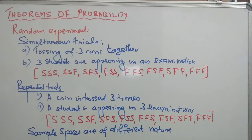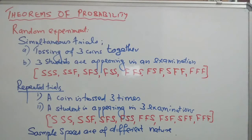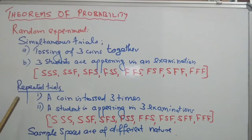We need further concepts about the composition of a random experiment. A random experiment is the starting point of probability analysis — an experiment where the outcomes are uncertain but the total possibilities are known in advance. We have two types of random experiments: simultaneous trials and repeated trials.